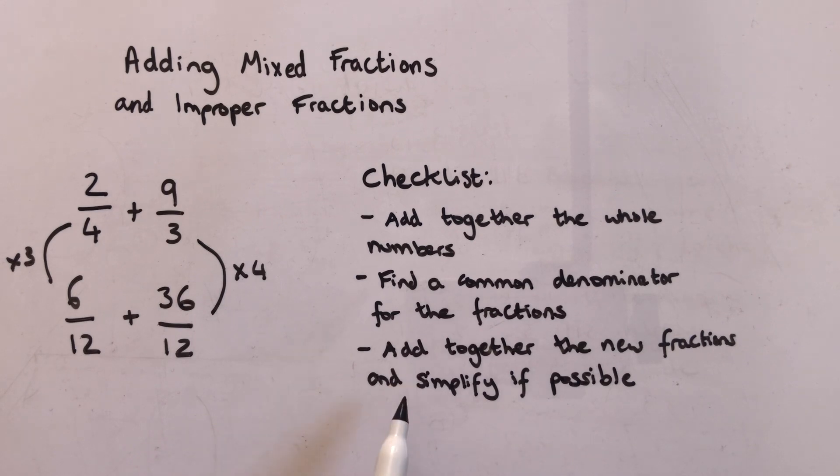So now it says I have to add together the new fractions and simplify if possible. I've got the same denominator, so I can add the numerators together, which gives me forty-two twelfths. Now I can simplify this to be a mixed fraction with some whole numbers.